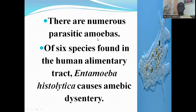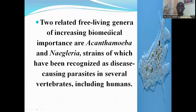There are numerous parasitic amoeba; six species are found in the human alimentary tract. Amoeba histolytica causes amoebic dysentery. Two related free-living genera of increasing biomedical importance are Acanthamoeba species and Naegleria. These strains have been recognized as disease-causing parasites in several vertebrates, including humans.